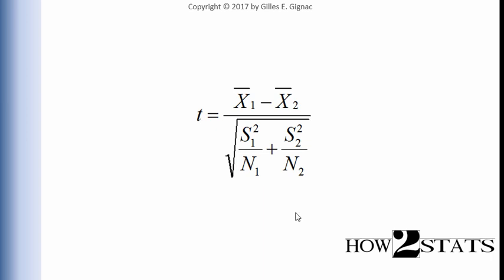Here is the independent sample t-test formula in all its glory, and we can see that the standard error of the difference between two sample means is at the bottom. We can see that variability in the data plays a central element to the formula. In the one sample t-test case it was represented as a standard deviation, but in the two sample t-test case, the variances associated with each sample play the crucial part — it's a different expression of variability.